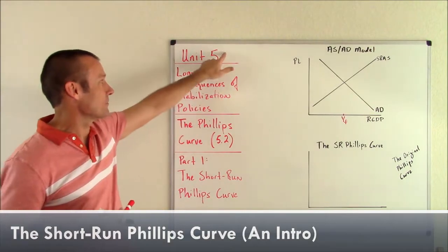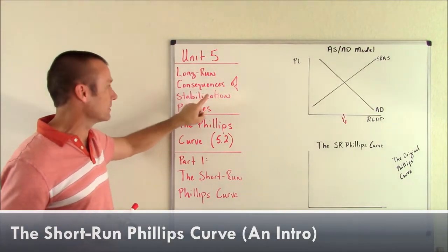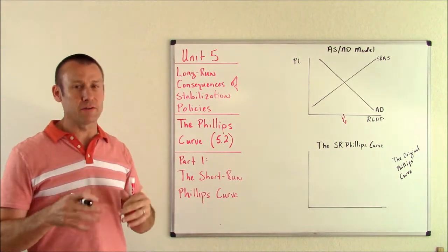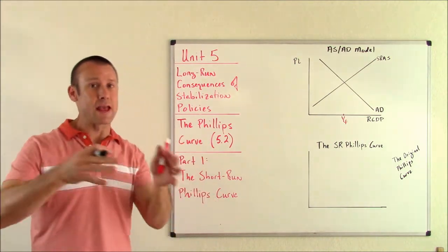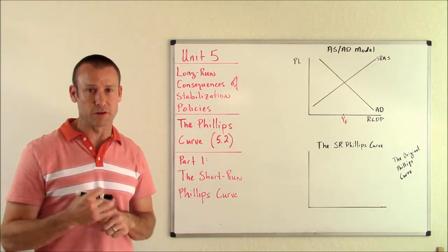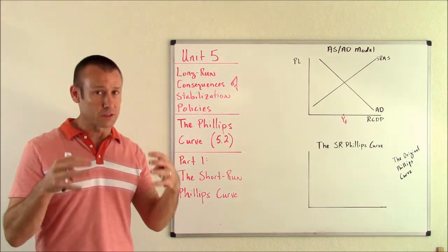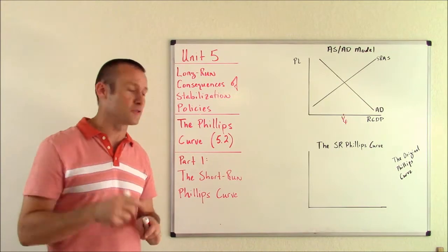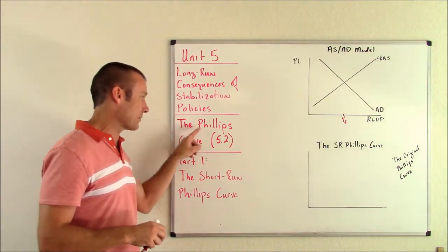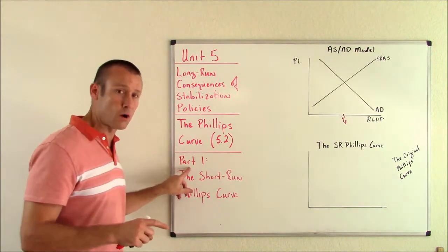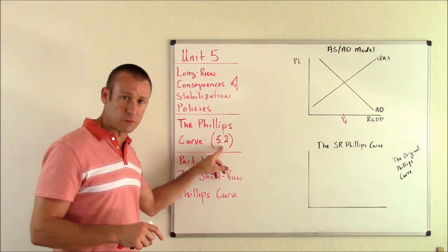Hey everybody, welcome back to Unit 5, the long run consequences of stabilization policy. Technically speaking, Unit 5 is looking at both the short run and the long run consequences of stabilization policies. This particular video is going to be focused mainly on the short run. This video is focused on the Phillips curve, subunit 5.2, part one.